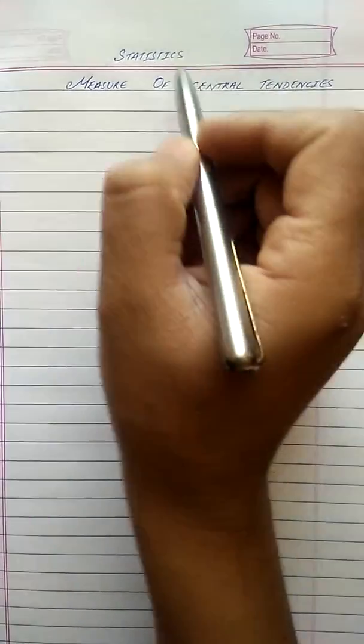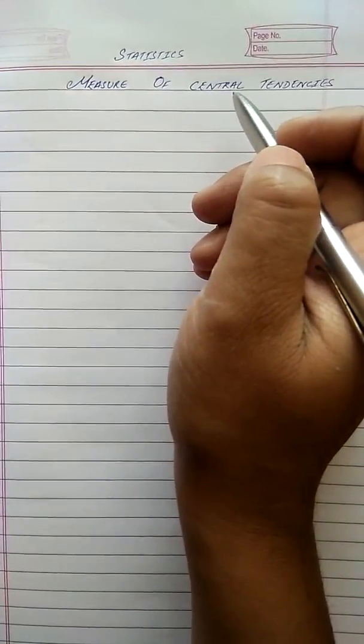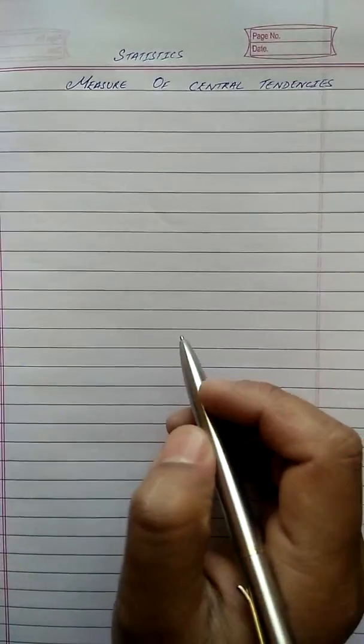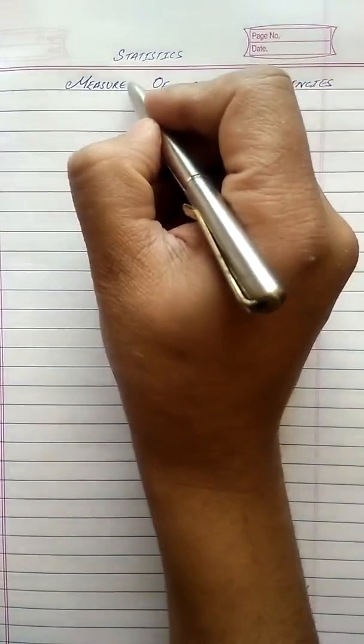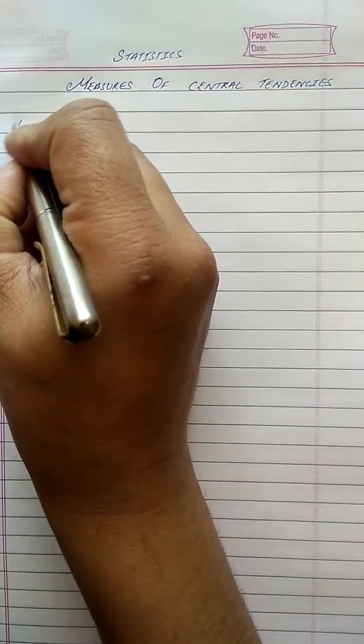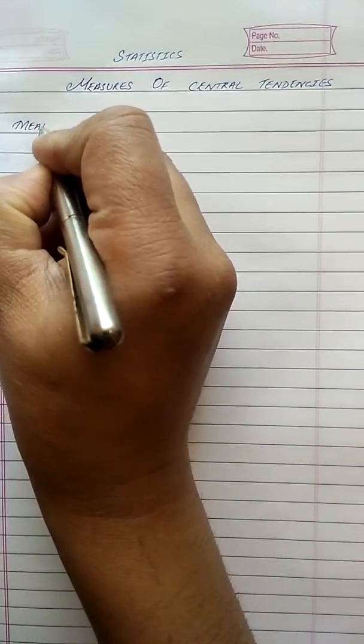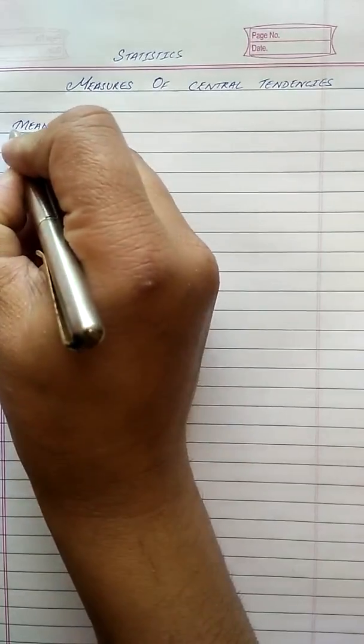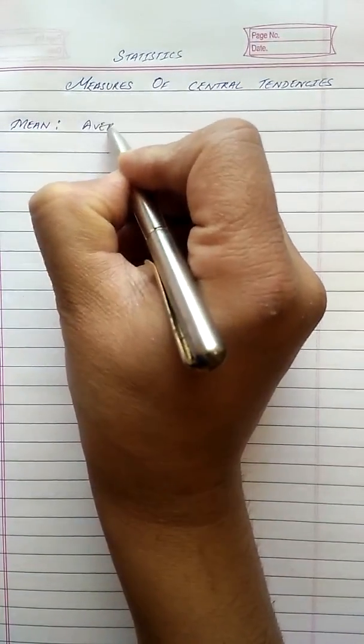Today we are going to start the chapter statistics and learn measures of central tendencies. In the first class we are going to learn about mean. Mean is nothing but simply the average of any given data.